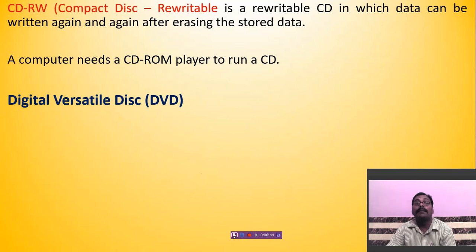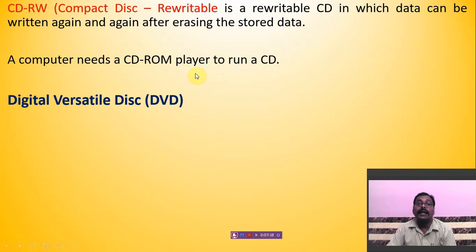The third type of CD is CD-RW — Compact Disk Rewritable. It is a rewritable CD on which data can be written again and again after erasing the stored data. You can write and erase the data very easily. For using a CD, a computer needs a CD-RW player — only then you can use the CD to read and write.